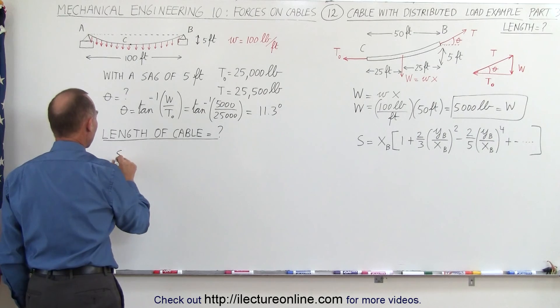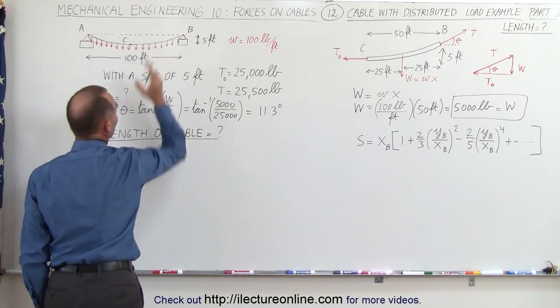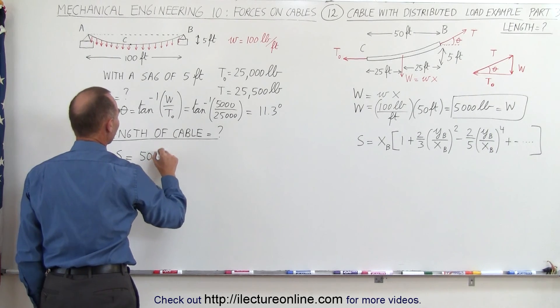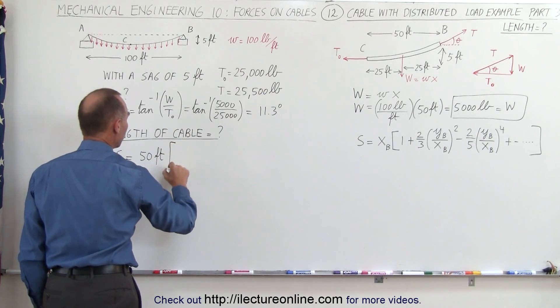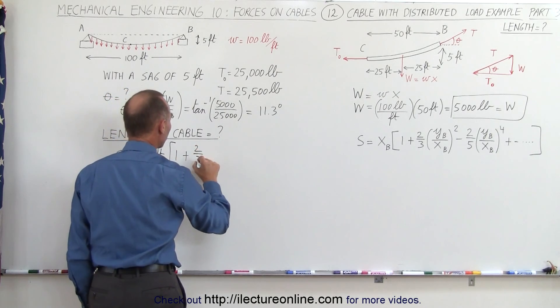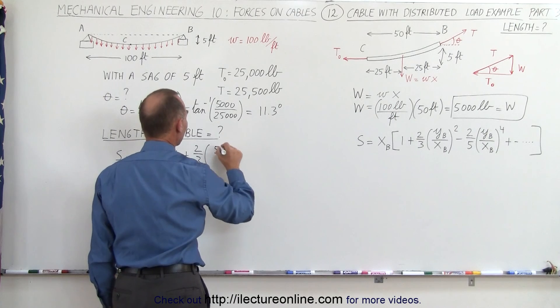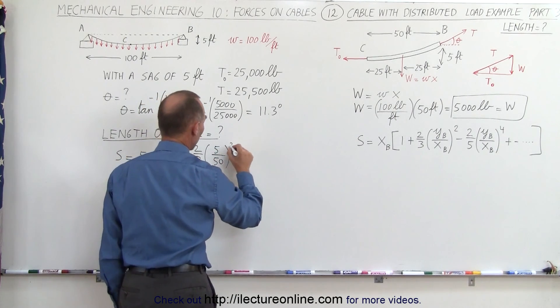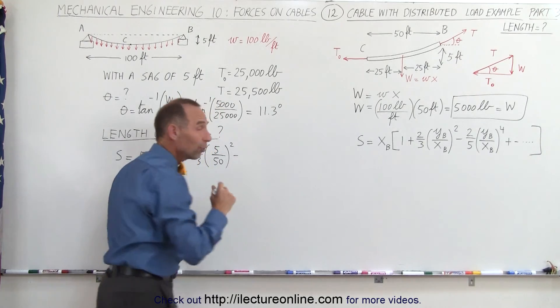So the length of the cable from the halfway point to where it's attached is equal to the horizontal distance of 50 feet, multiply times 1 plus 2 thirds times the quantity, 5, which is the sag, divided by the horizontal distance, quantity squared, and then we're going to add this third term.